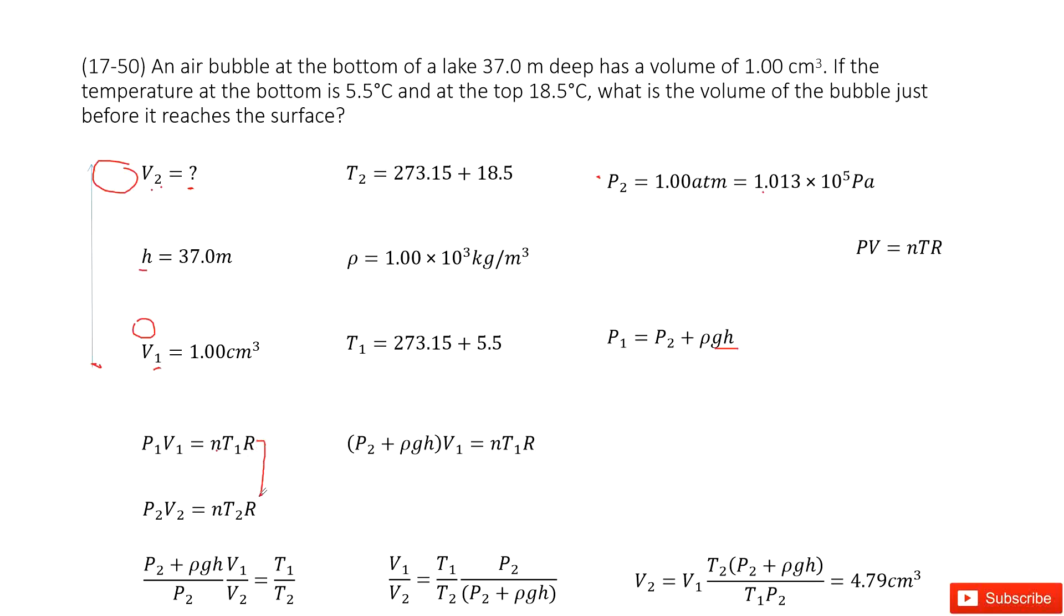Now we have these two functions. We need to find the value for V2, so we need to solve it. First, we look at P1 equals P2 plus ρgh. So we substitute P1 inside, and this term becomes this one. So we replace P1 as P2 plus ρgh times V1 equals nT1R.